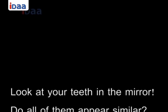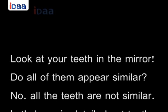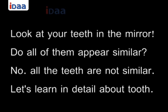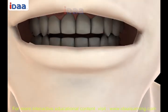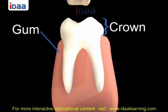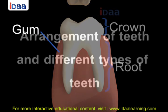Look at your teeth in the mirror — do all of them appear similar? No, all the teeth are not similar. Let's learn in detail about tooth structure. Every tooth is embedded in a socket called the gum. The crown is the visible part of the tooth above the gum, and the root is the part of the tooth under the gums.